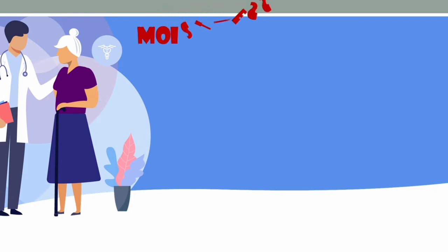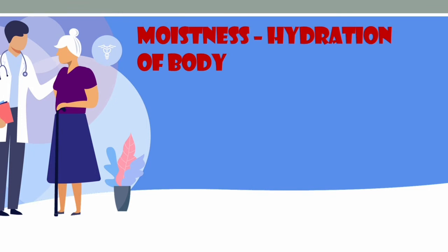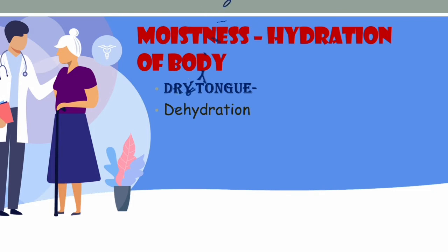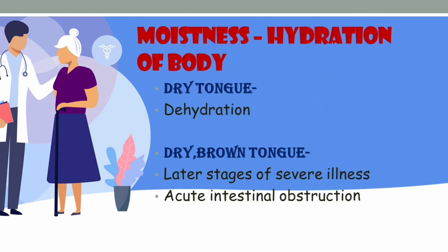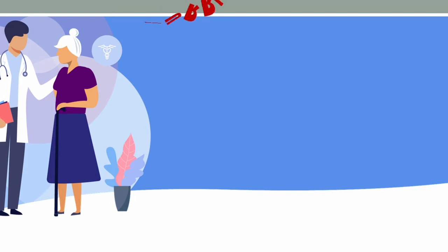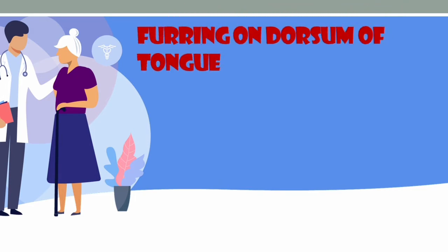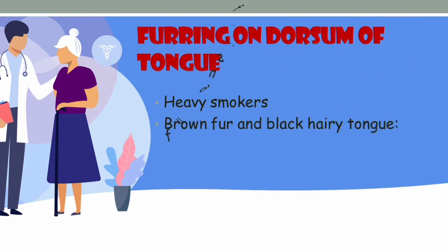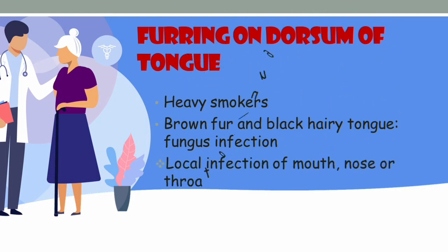Now we check the texture of the tongue, starting with moistness. Moistness tells us whether the patient is hydrated or not — a dry tongue indicates dehydration. A dry and brown tongue suggests later stages of severe illness, acute intestinal obstruction, or advanced uremic cases. Next, we examine furring on the dorsum of the tongue. Furring is most commonly seen in heavy smokers, Aspergillus fungal infection, and local infections of the mouth, nose, throat, and lungs.